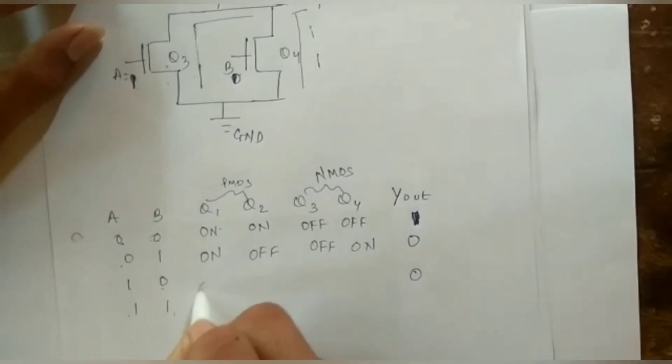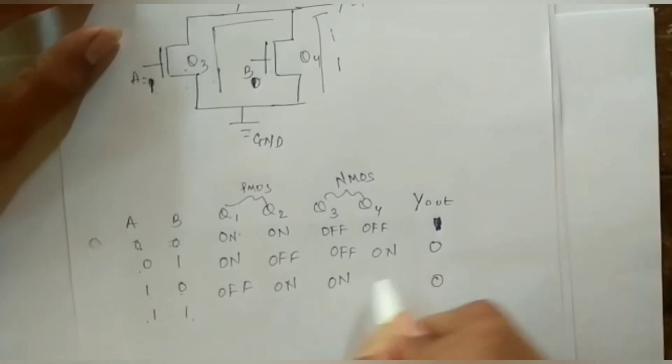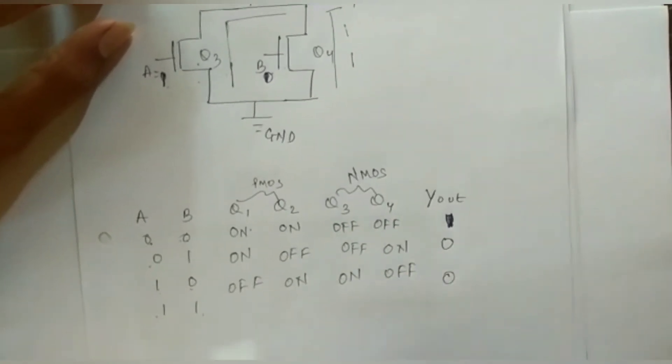So this will be OFF, this will be ON, this will be ON and this will be OFF.